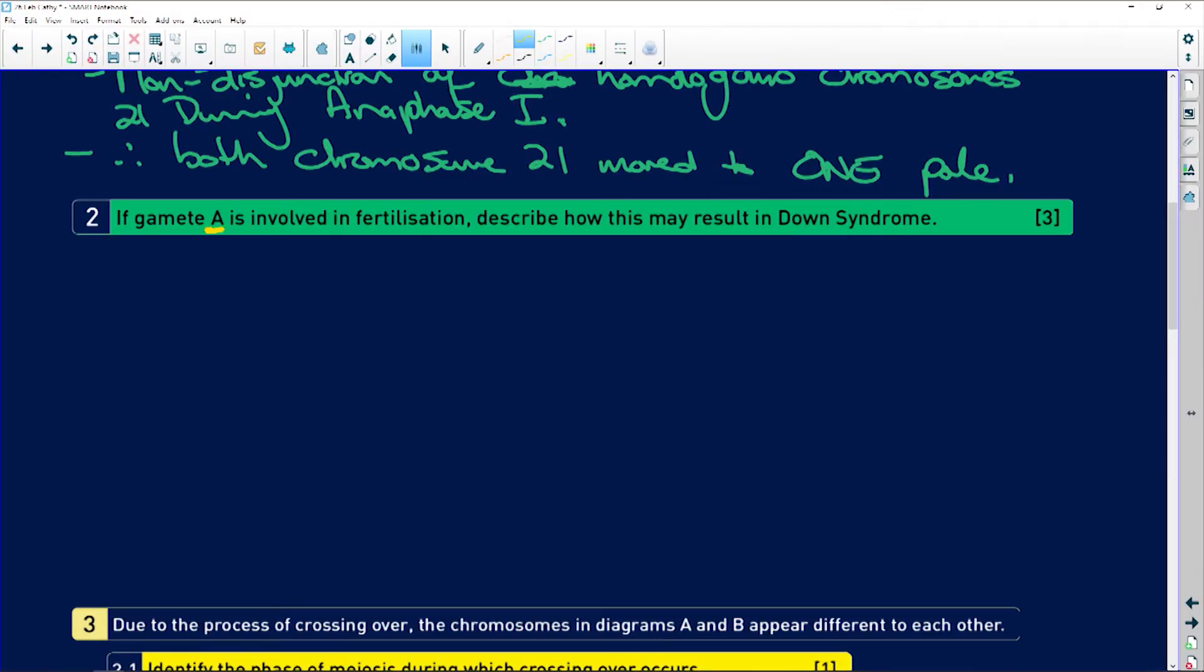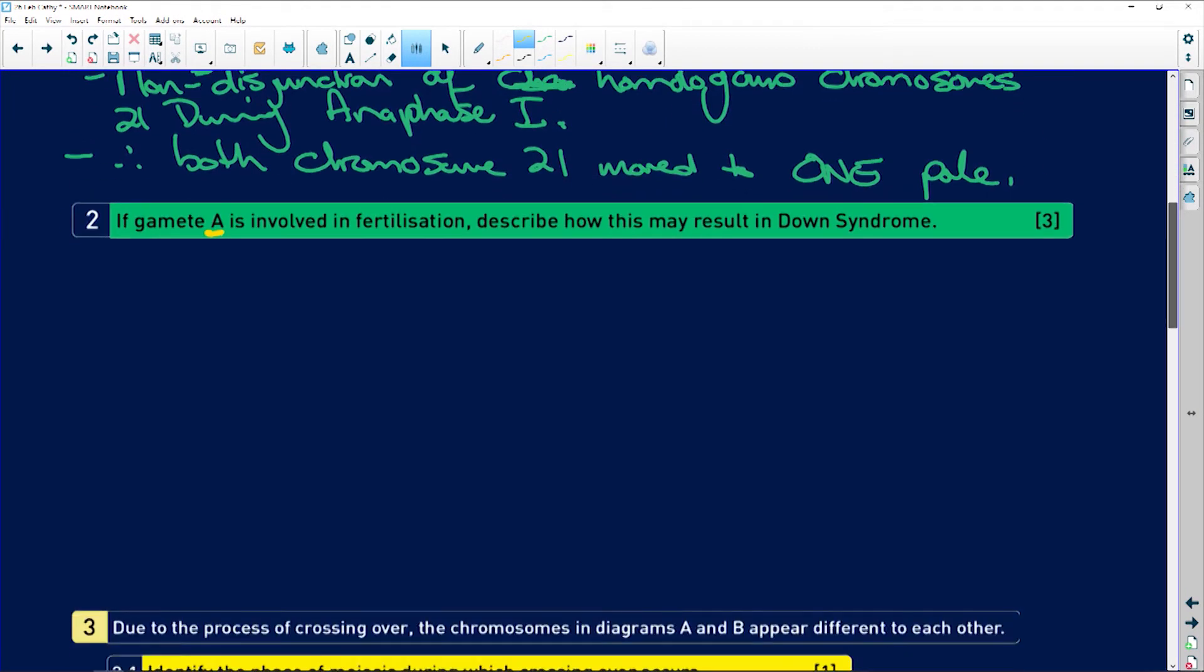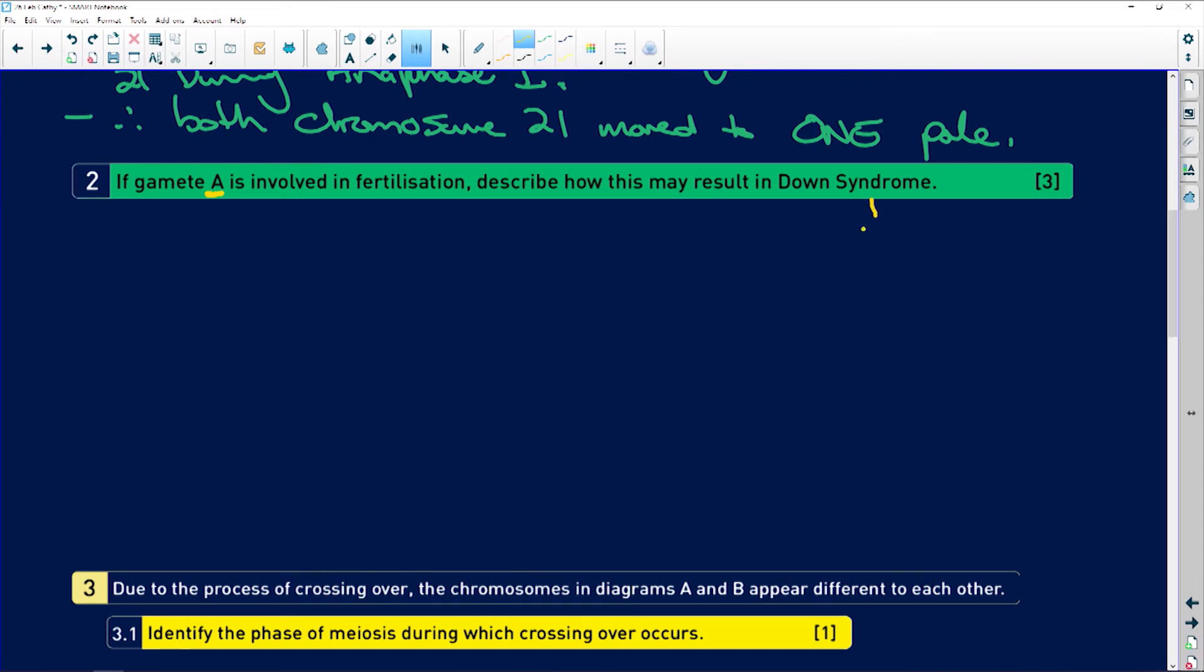The gamete A is involved in fertilization. Describe how this may result in Down syndrome. People remember Down syndrome. Down syndrome will have 24 chromosomes. 24 plus 23 is going to be 47. And that is what results in a Down syndrome child. Don't be thrown because they say in a male. Because people tend to think only women have chromosomes that have 24 chromosomes and non-disjunction. It's not true. Men have it too, but it's very rare.